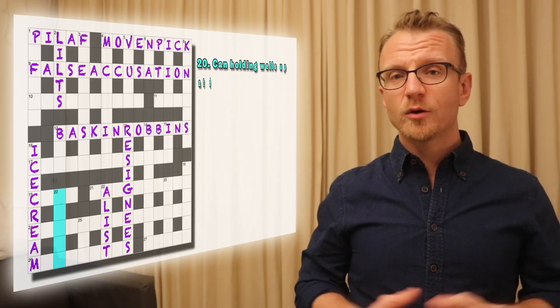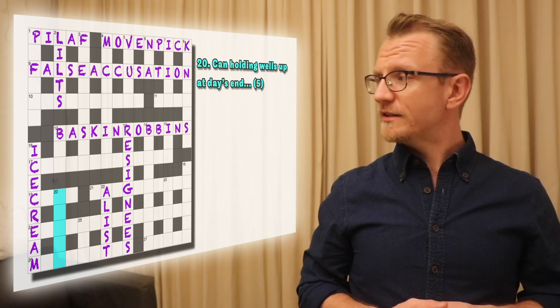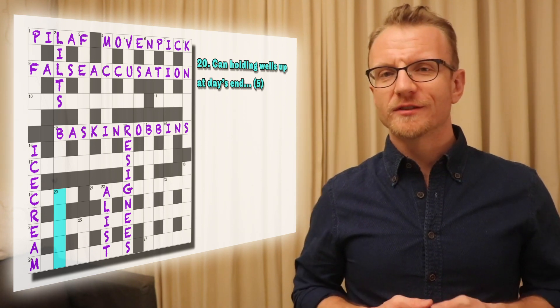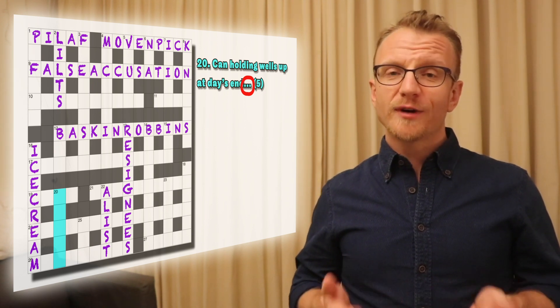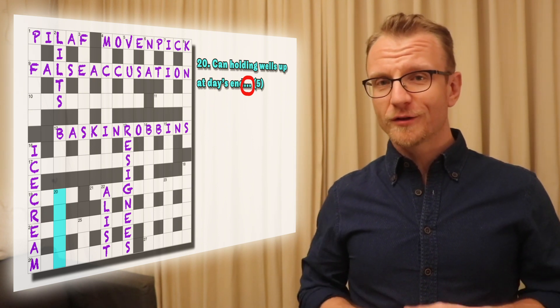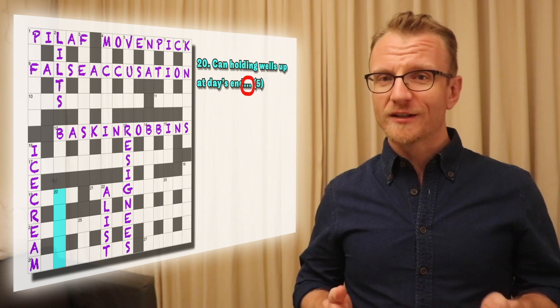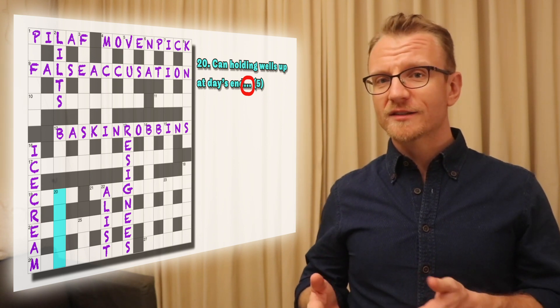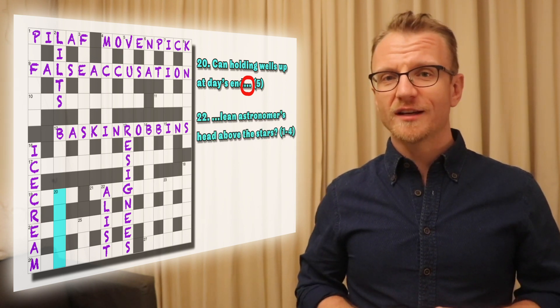So looking at the container clue from our master grid: can holding wells up at day's end. One more thing to mention - just a quick side note about the ellipsis. It doesn't necessarily have any impact on the clue. It's just a device that allows a setter to write a clue that's only half a sentence. This is a complete cryptic clue but it doesn't make complete grammatical sense. If you connect it to the next clue with the ellipsis, you circumvent that issue.